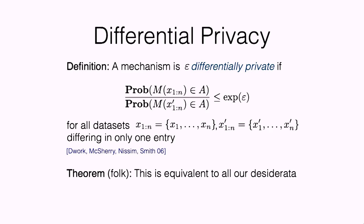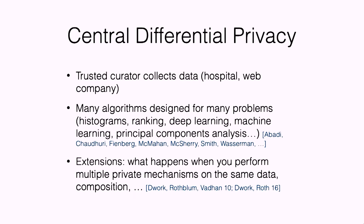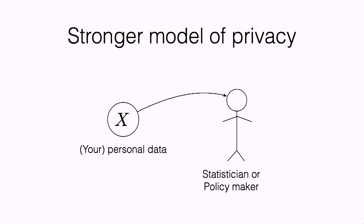This definition presumes a trusted curator. If you're carrying your phone around in your pocket, it presumes you trust whoever gave you the phone and is collecting data to aggregate it safely. There are more secure versions of this, and there's a lot of work on developing algorithms under these restrictions — estimating histograms, rankings, doing deep learning. There's been a ton of research on this in the last 15 years. We can also have stronger models of privacy, which is something we've been working on.